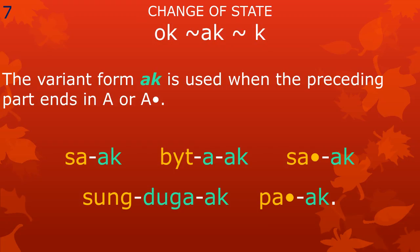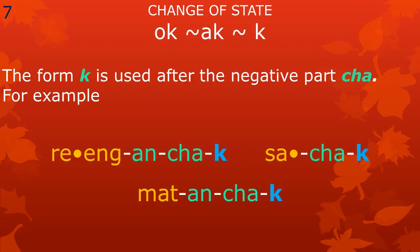We have already seen in lesson 10 that the change of state meaningful part has three variant forms: namely ok, ak, and ke. The variant form ak is used when the preceding meaningful part ends in a or a-raka, as in the words saak, betaak, saak, sungduak, and paak. The variant form ke is used after the negative meaningful part, as for example in the words re'ngan chak, sa chak, and matan chak.